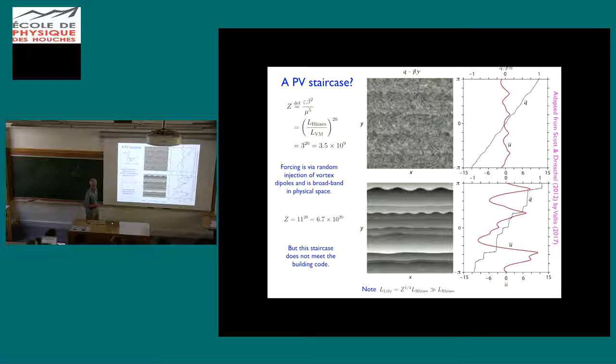Then they crank it up, 11 times 10 to the 20, and this is what they get. So they certainly see discontinuities in the PV, but it's not a regular staircase. So as I'm joking here, this staircase would not be accepted by any reasonable building inspector. It's just too irregular. But nonetheless, it's the best attempt so far to achieve this regime that was first described by Marcus, in which you're mixing the PV into a staircase.